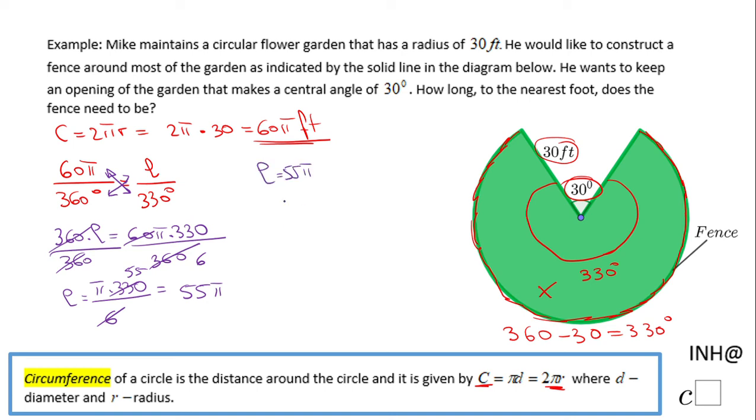I'm gonna use the π in the calculator, and using that I end up with 172.7875 feet. I'm gonna round it to the nearest foot, so Mike will need 173 feet of fence to go around, like you see one more time here.